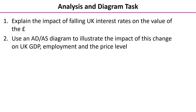Now here is a little analysis and diagram task. First, explain the impact of falling UK interest rates on the value of the pound — think about what we've just done and see if you can reverse that to see what happens when interest rates fall. Then show on an aggregate demand/aggregate supply diagram the impact of this change on UK GDP, employment and the price level. Pause the video, have a go at this task, and I'll join you in a moment.